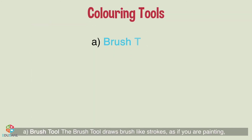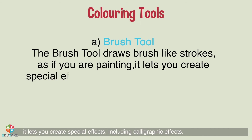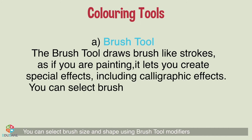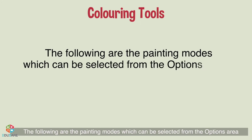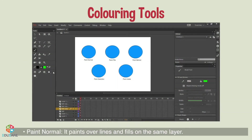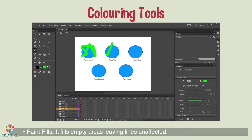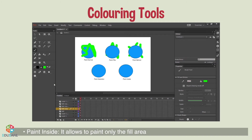Coloring tools. Brush tool: the brush tool draws brush-like strokes as if you are painting; it lets you create special effects including calligraphic effects. You can select brush size and shape using the brush tool modifiers. The painting modes are: Paint Normal — paints over lines and fills on the same layer; Paint Fills — fills empty areas leaving lines unaffected; Paint Behind — paints behind existing lines and fills; Paint Selection — applies a new fill color only to the selected filled area; Paint Inside — allows painting only the fill area and never outside the lines.